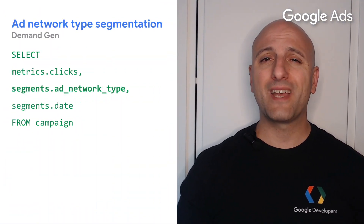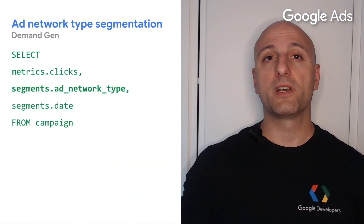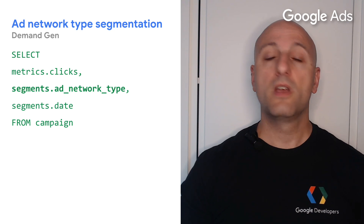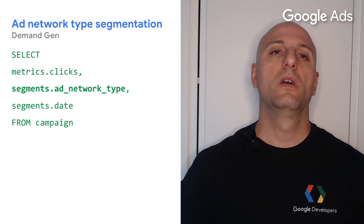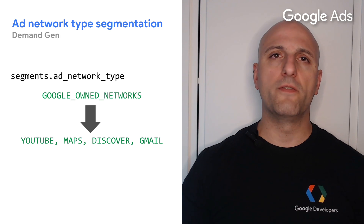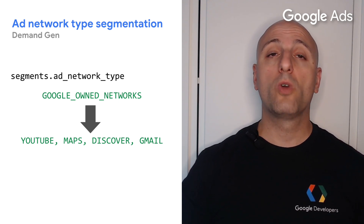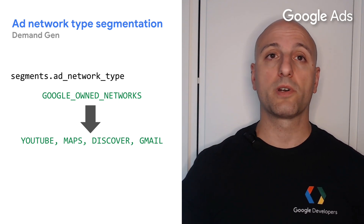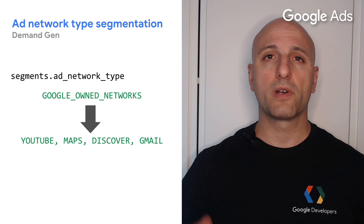Now in v20 you can also get reporting segmented by those advertising services, even if you haven't configured targeting for any of them specifically. Before v20, all the surfaces you can target in Demand Gen were being returned under just one ad network type called Google owned networks.